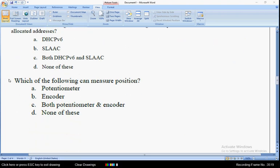Coming to the ninth question: which of the following can measure position? The answer is both potentiometer and encoder, so mark option C as the correct answer for the ninth question.